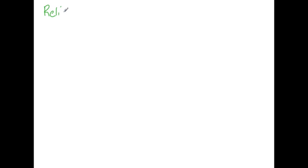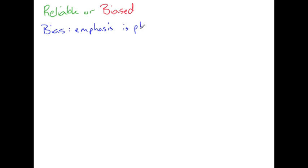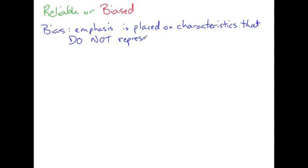One final thing to consider when writing or creating a survey is whether the survey is reliable or biased. Bias means that emphasis is placed on characteristics that do not represent the population. Bias in a survey is not good — in a sample survey, it is biased if it does not accurately represent the population.